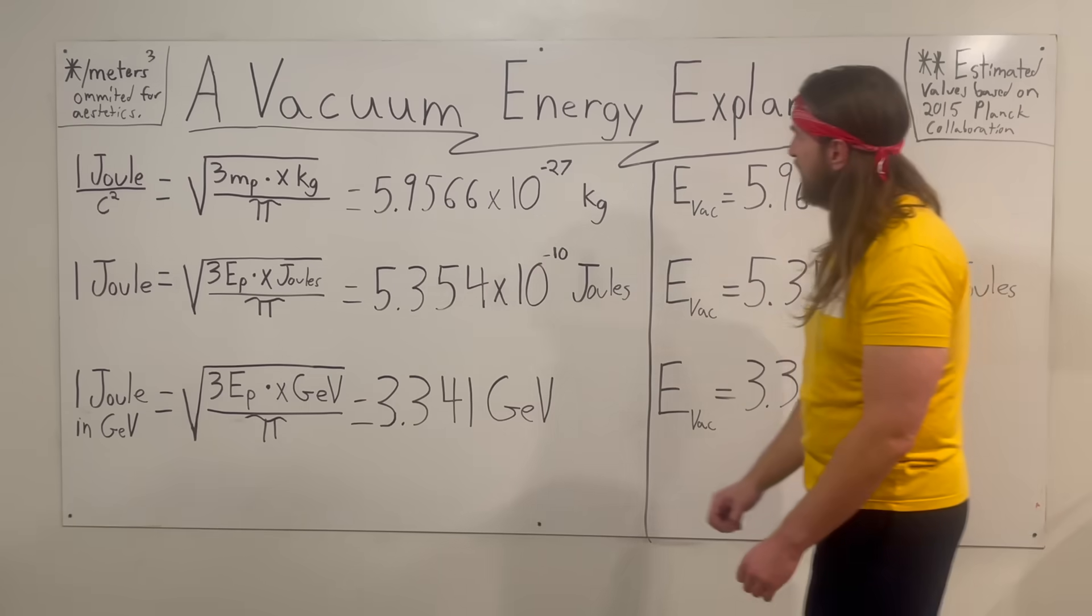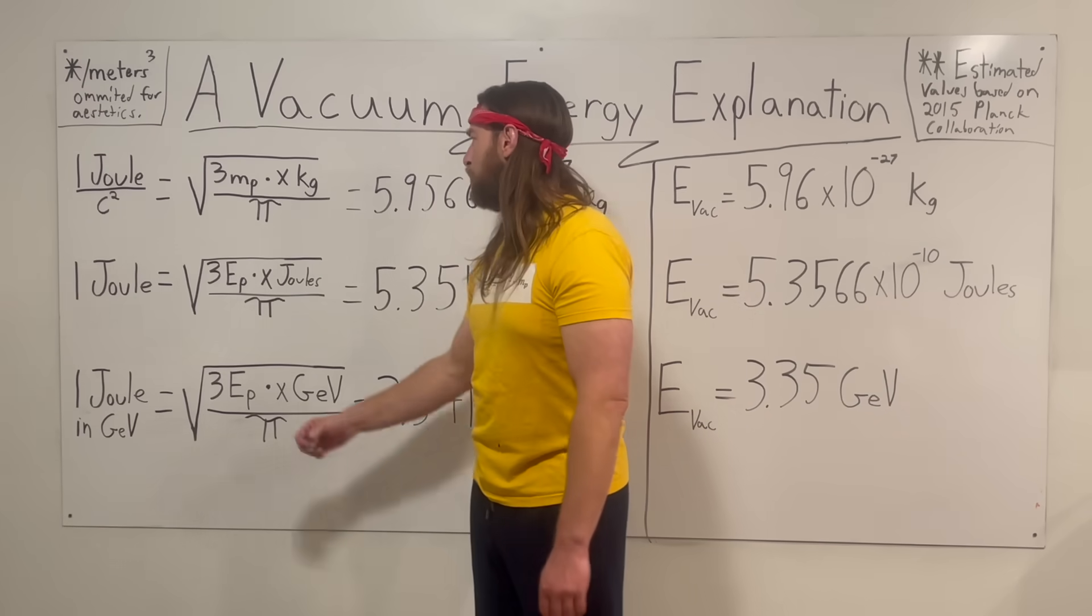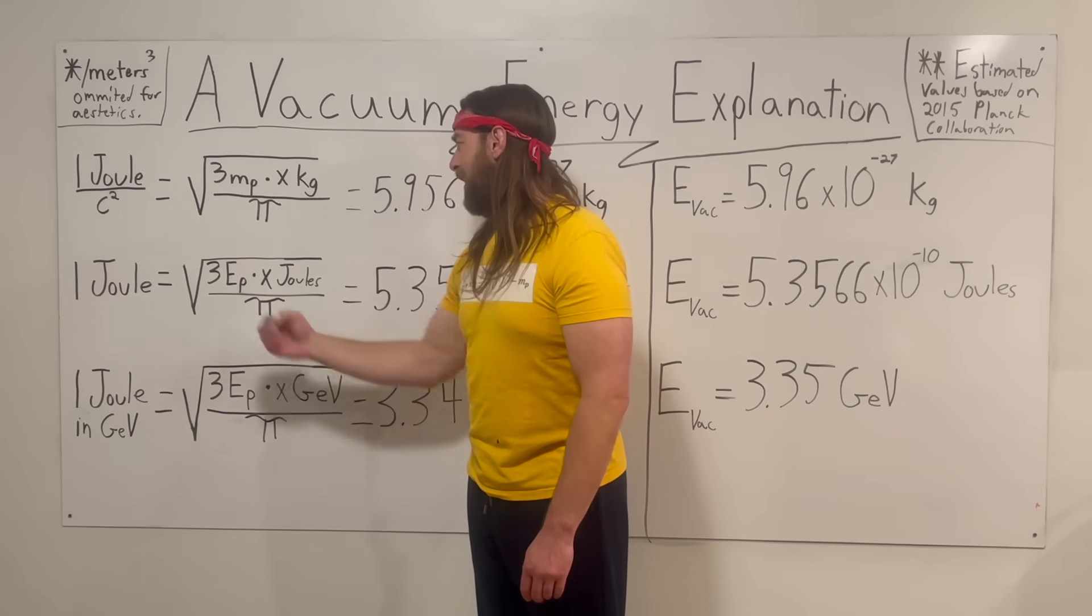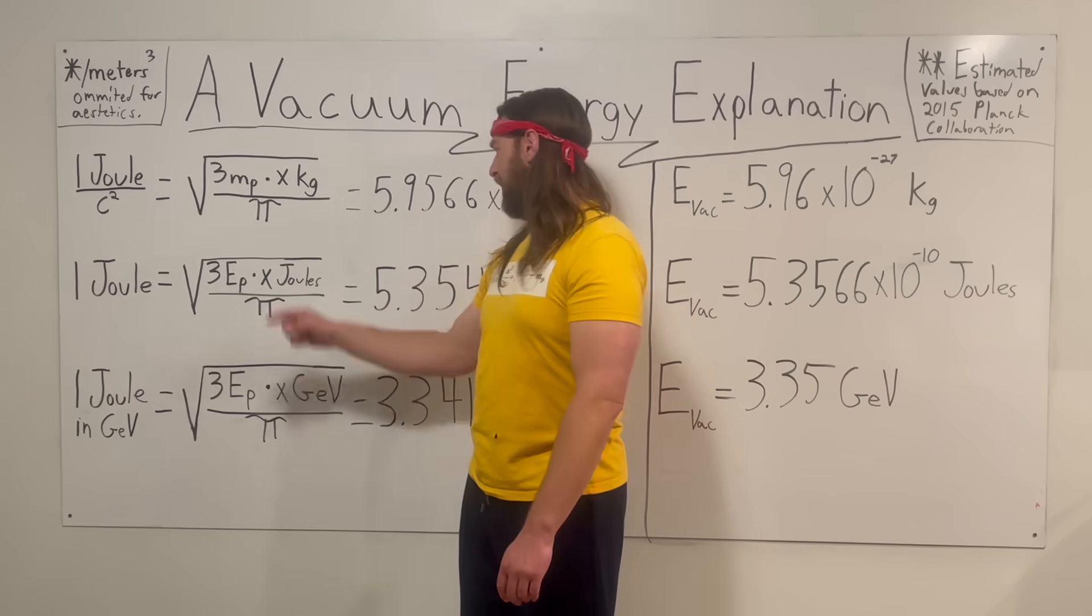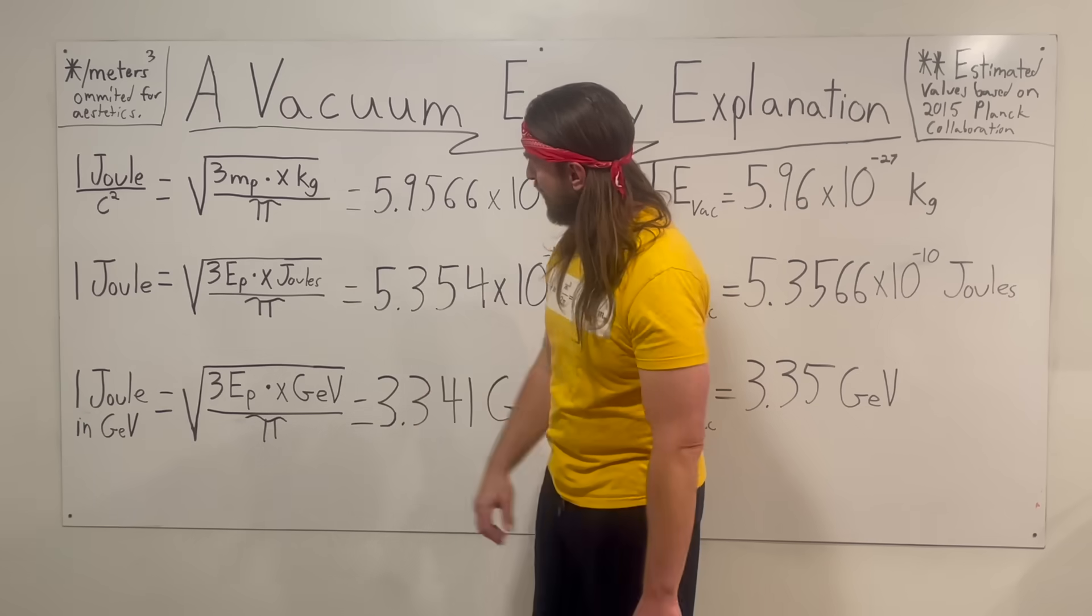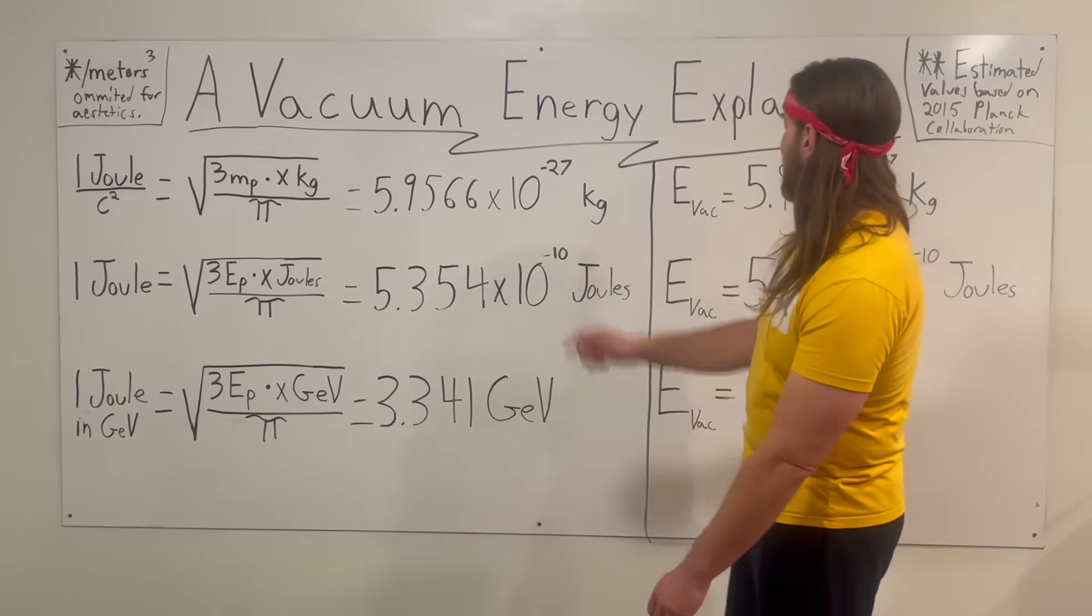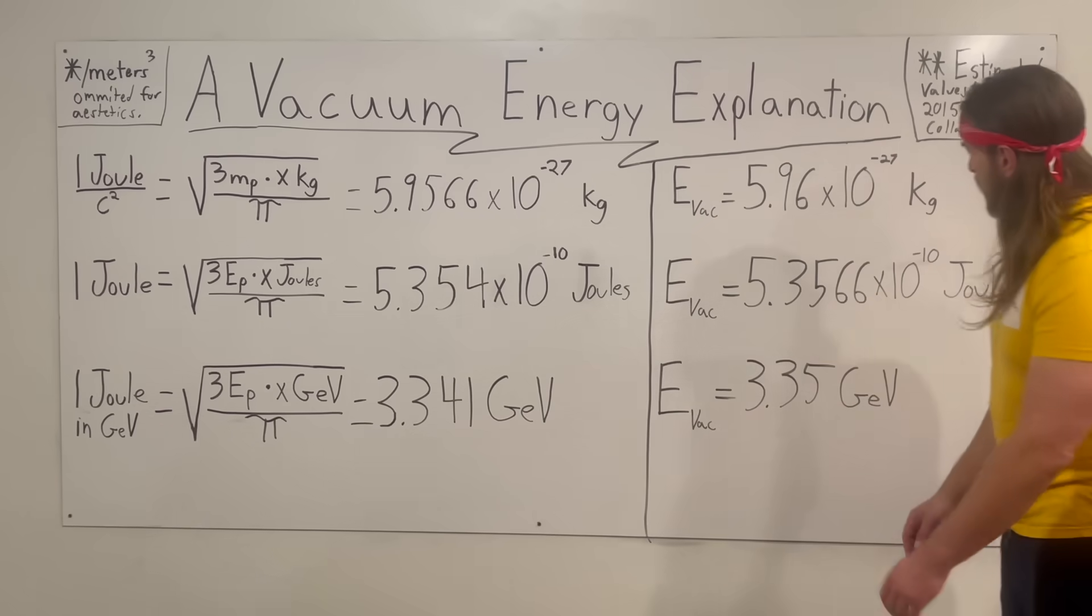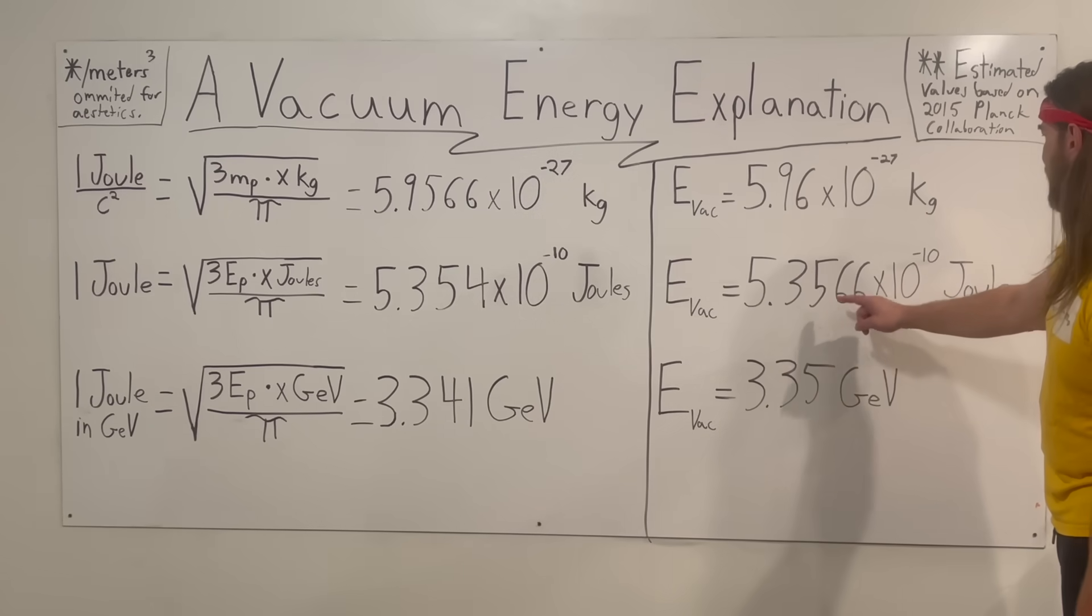How about one joule? We do the same thing, except we express the Planck mass in its energy equivalent, and we're solving for X joules, divided by pi in that geometric number. We get 5.354 times 10 to the negative 10 joules. What do we have listed for our estimated measurement? 5.3566 times 10 to the negative 10 joules. Again, a little bit below that.